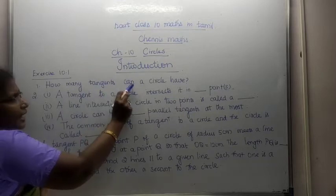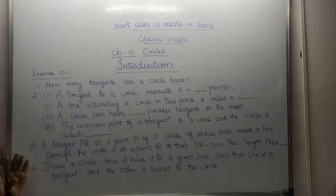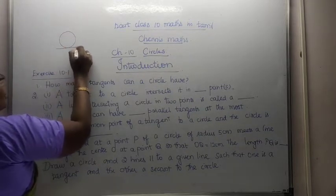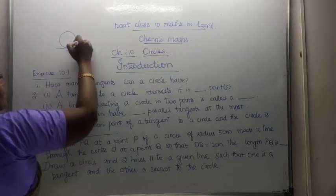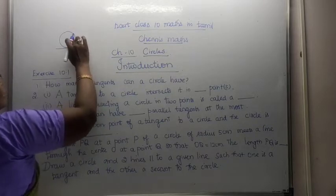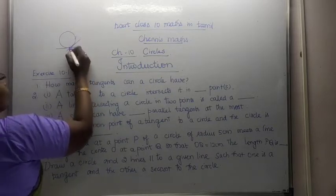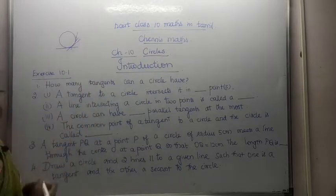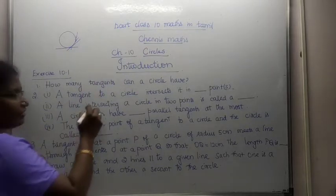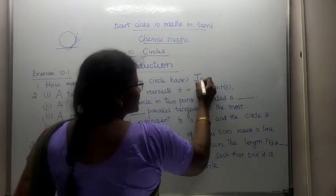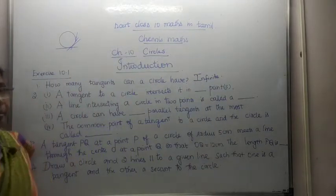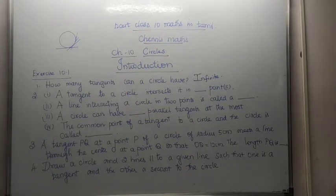How many tangents can a circle have? One circle — how many tangents can it have? We can draw an innumerable number of tangents. Therefore, an infinite number of tangents can be drawn to a circle.